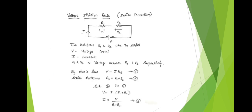We apply the voltage division rule only for series connection. Here we take a series connection with two resistors — same setup: two resistors in series, V is the supply voltage, I is the current (current will be the same), and V1 and V2 are the voltages across R1 and R2 respectively. By Ohm's law: V = I × Rs (Equation 1), and Rs = R1 + R2 (Equation 2). Substituting Equation 2 into Equation 1 and solving for I: I = V / (R1 + R2). Mark this as Equation 3.